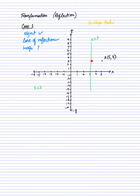We need to find the distance from the point to the line of reflection. The line is at x equals 3 and the point is at x equals 5, so the difference is 2 units — 5 minus 3 equals 2. The line of reflection divides the shape into exactly two equal parts, so if this distance is 2 units, the reflected distance must also be 2 units.